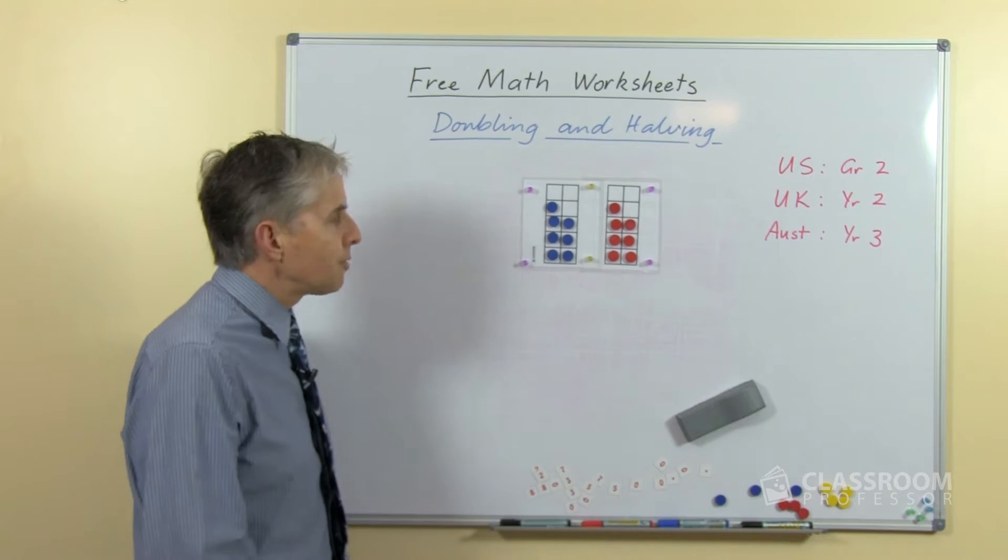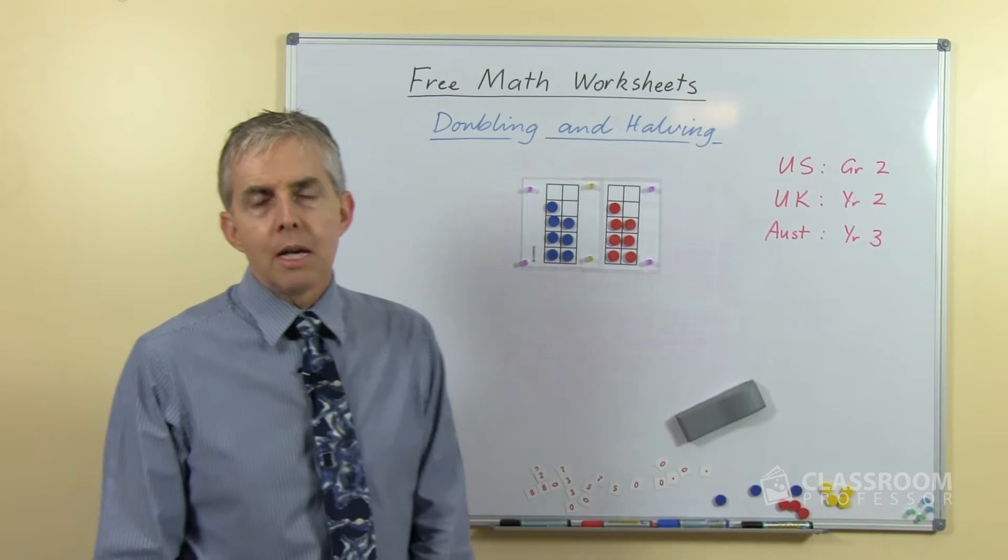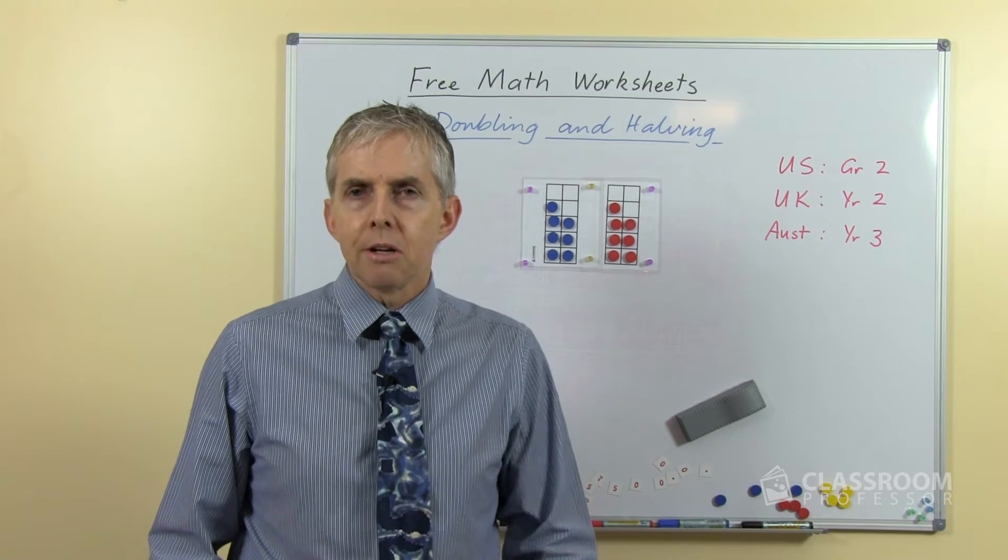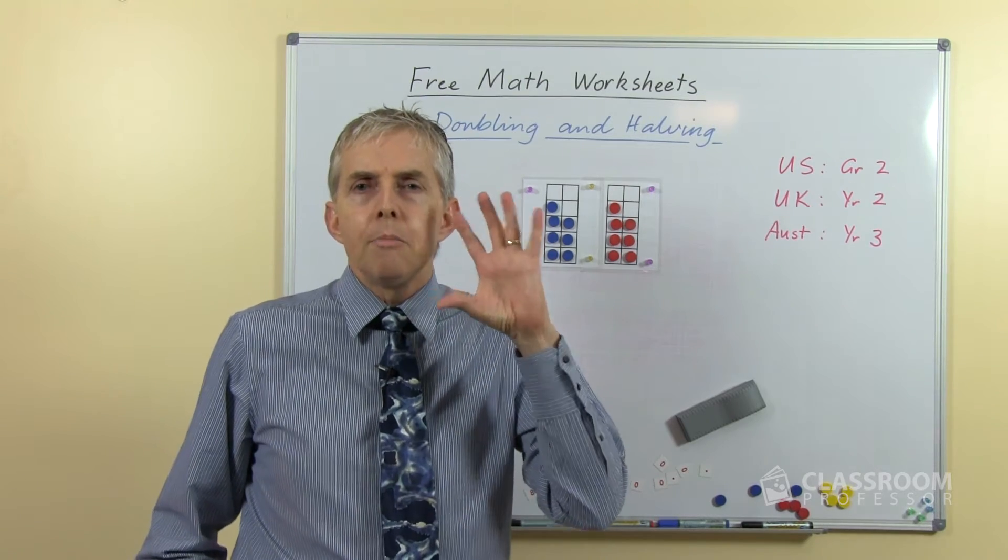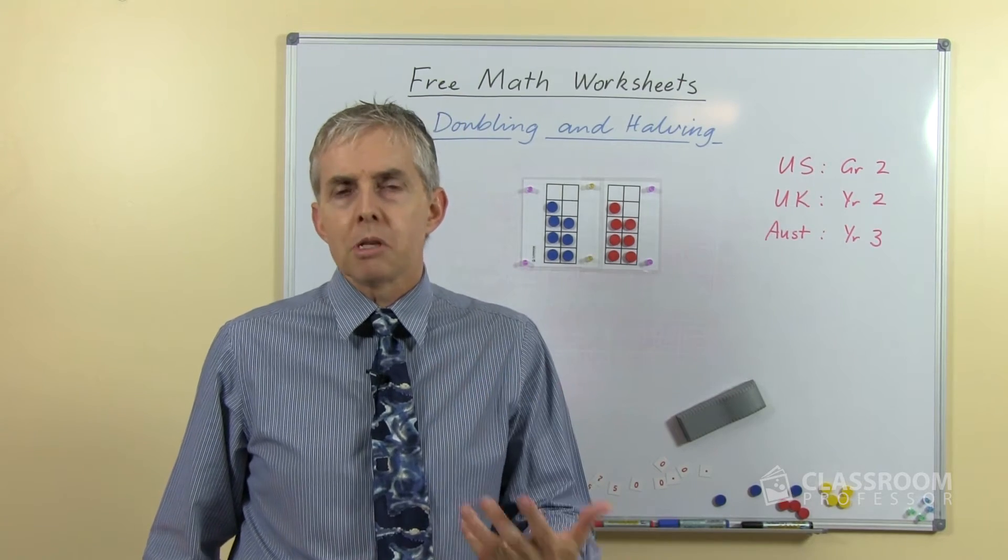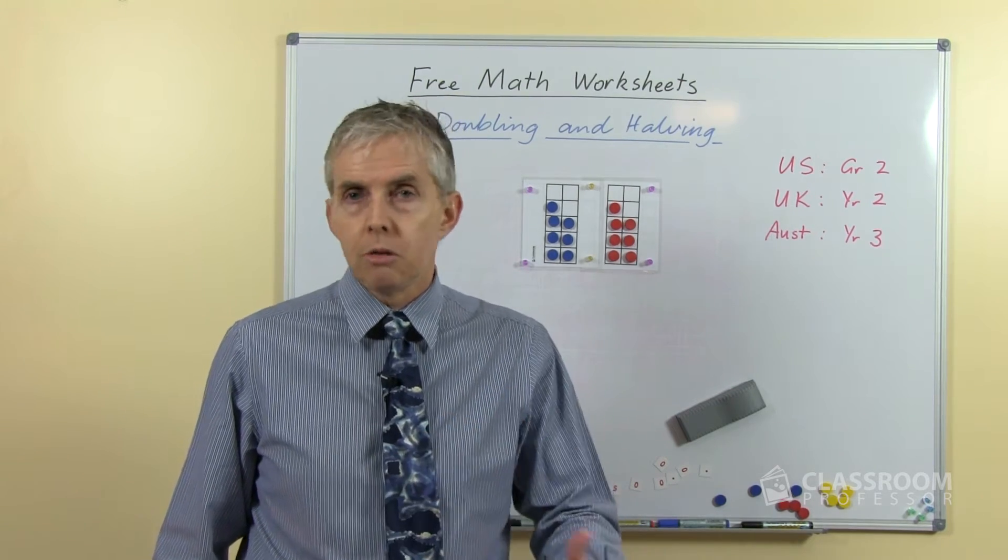We're dealing with number facts where the two numbers being added together are the same. Some of these are nice and easy, some you can picture in your mind's eye, you can subitize counters if you see them. I'm thinking of examples like double one, double two, double three.